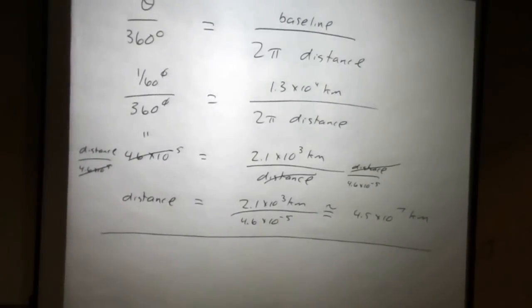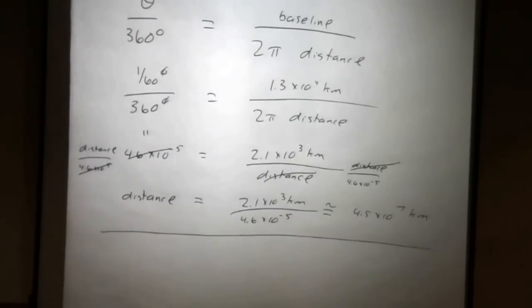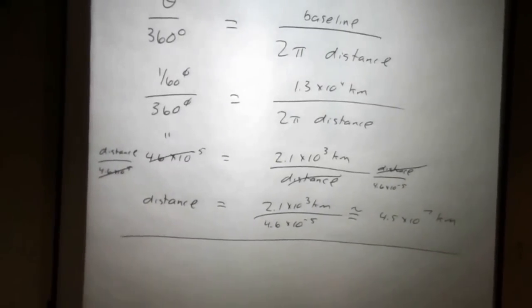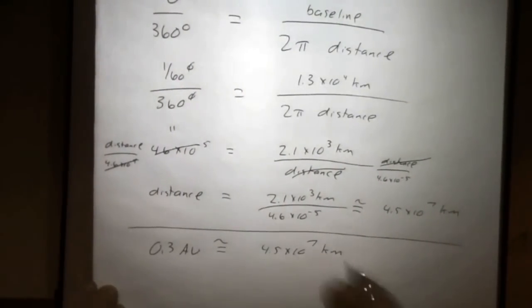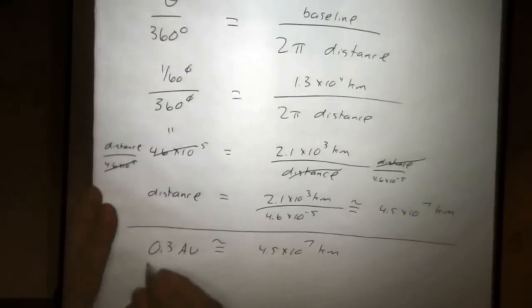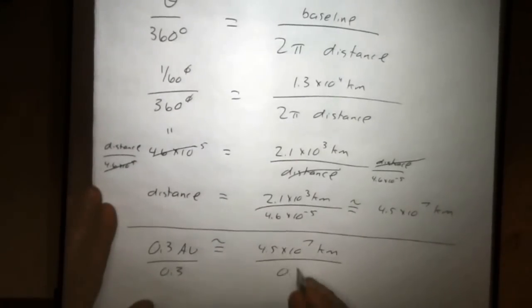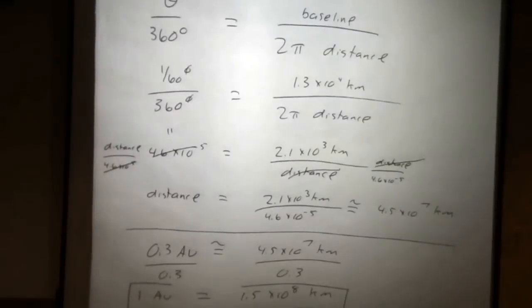So, let's go to the next level here, and let's solve for 1 AU. Now, at closest approach, Venus is approximately 0.3 astronomical units from Earth. So let's write that here. 0.3 AU is approximately 4.5 times 10 to the 7 kilometers. So if we want to know how many kilometers are in one astronomical unit, we'll divide both sides by 0.3. Over here, we get 1 AU is equal to, do the math, and it's 1.5 times 10 to the 8 kilometers. This is pretty big.